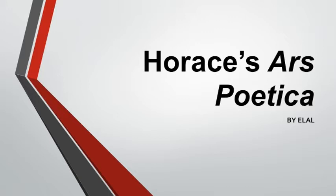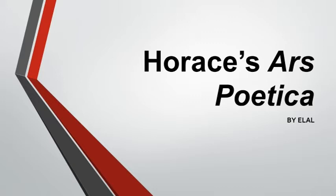After introducing Horace and his age, we shall enumerate Horace's rules and regulations for writing great poetry. With Horace, we now move into the second unit. The first unit was classical theory. This second unit, lectures 5 to 8, is neoclassicism.